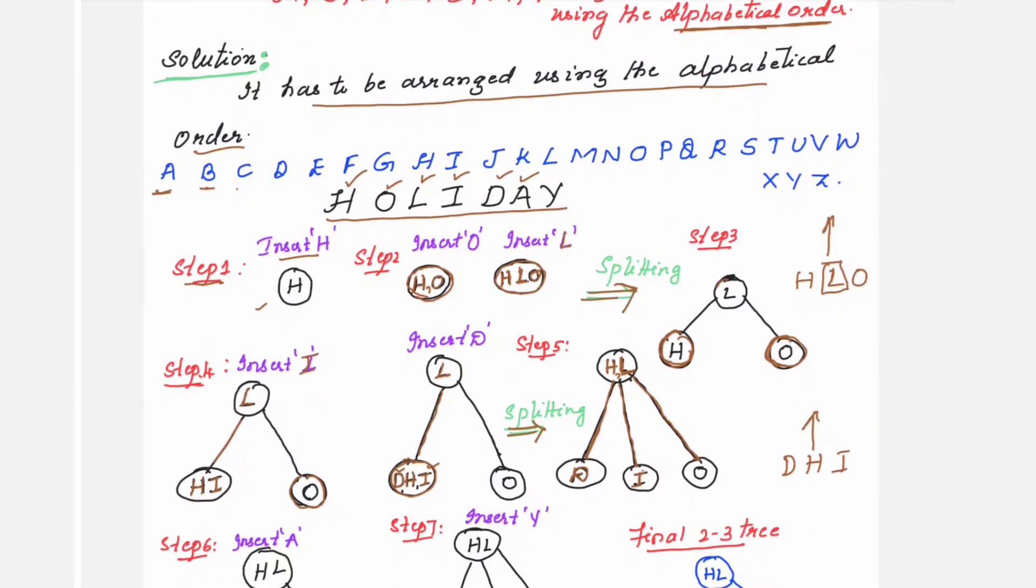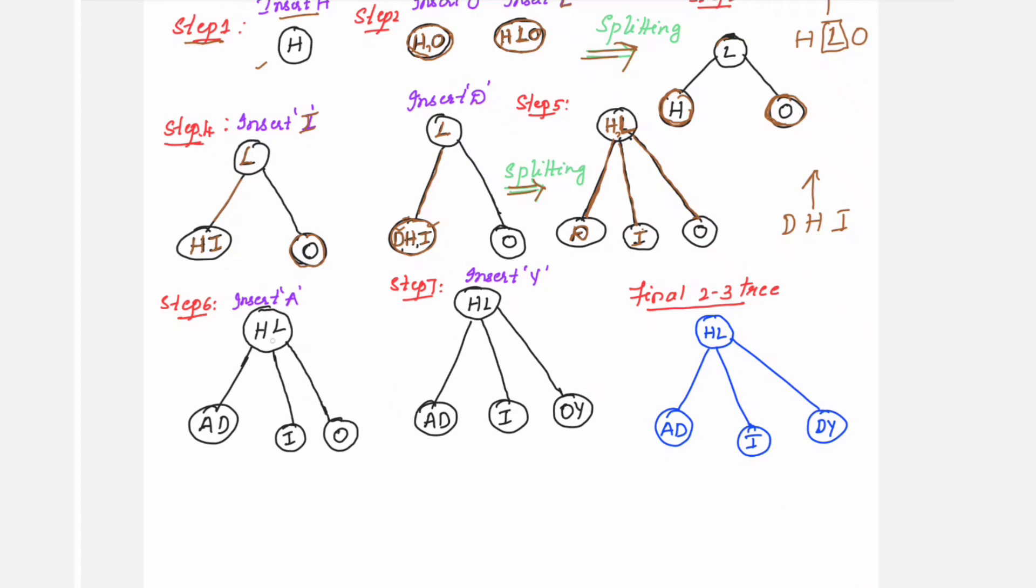Next element is A. Insert A. A comes before H, so you will be placing towards the left side. Already D was existing, and A comes before D, so you will place A here. Next, as it is, the other two nodes you are going to write down.